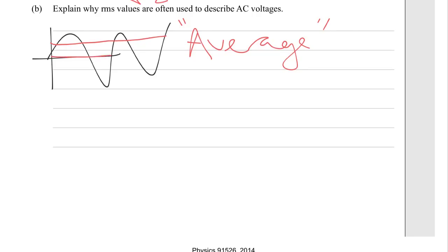because all of the above bits and below bits would cancel each other out. So it's useful to have an average, which is a root mean square average, to show what's going on. And to be able to compare to DC.